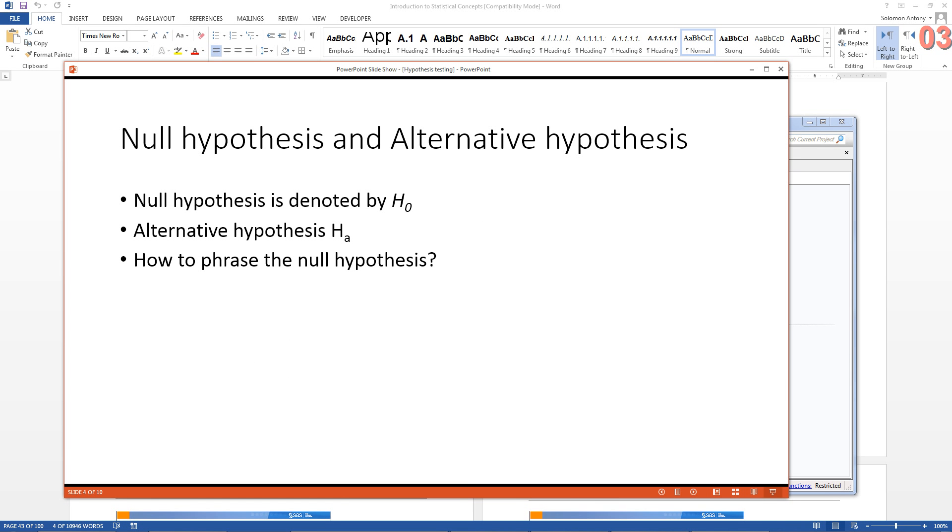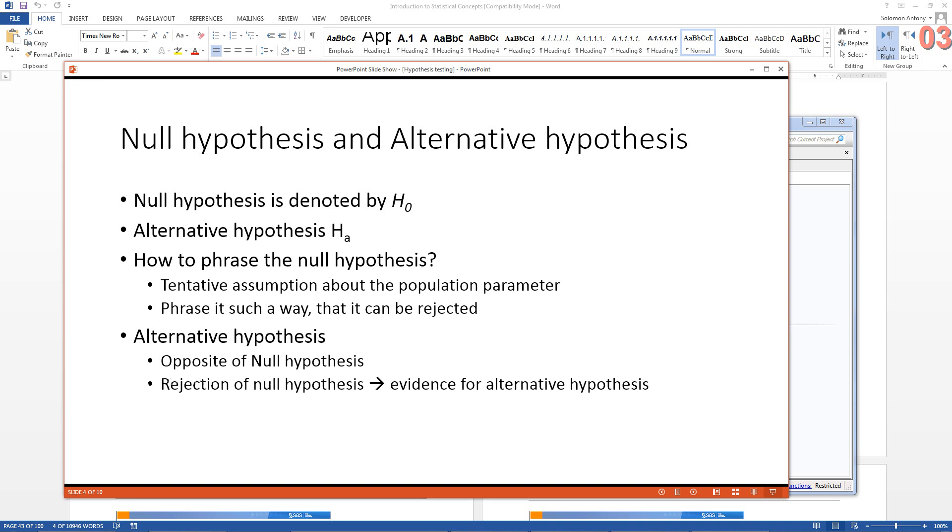And now, you need to phrase a null hypothesis in such a way that you can reject the null hypothesis because of the data that you found. And alternative hypothesis is essentially opposite of the null hypothesis. And whatever the null hypothesis states, the exact opposite of that is alternative hypothesis. And rejection of null hypothesis means that you find evidence for alternative hypothesis. So by rejecting null hypothesis, you are finding support for alternative hypothesis, and then you are saying yes, there is an effect.